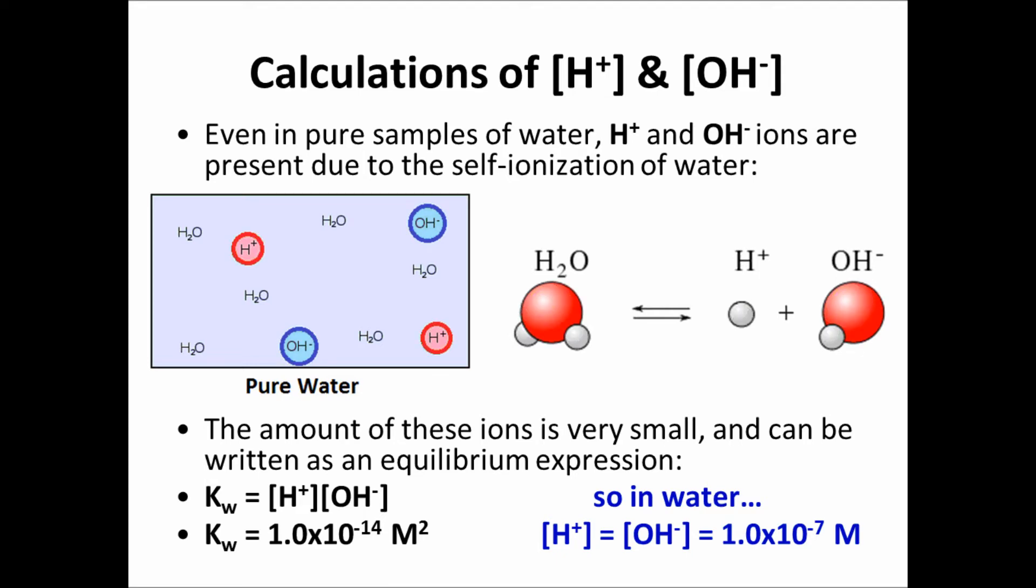Even in pure samples of water, we have hydrogen ions and hydroxide ions present in the solution. We talked about this in a previous video as well. The water molecules will actually break apart to some degree, not very many of them, but you'll have small amounts of hydrogen ions and hydroxide ions floating around in the solution. The amount, it turns out, of hydrogen ions or hydroxide ions is 1.0 times 10 to the negative 7th moles per liter.